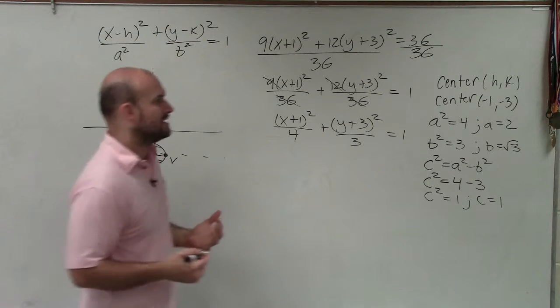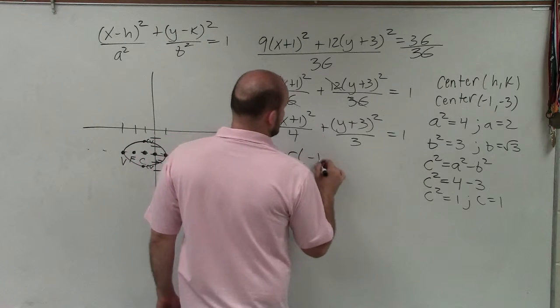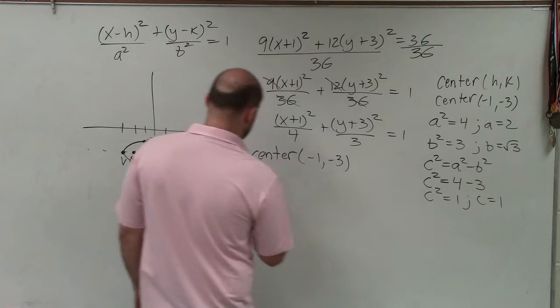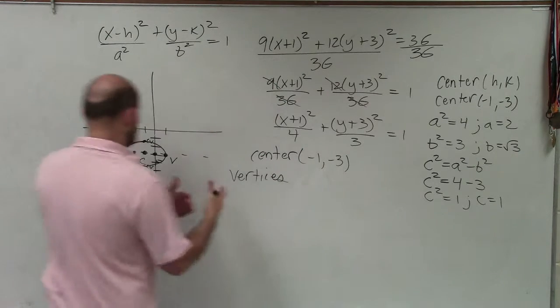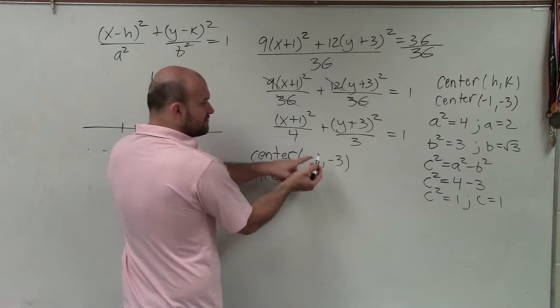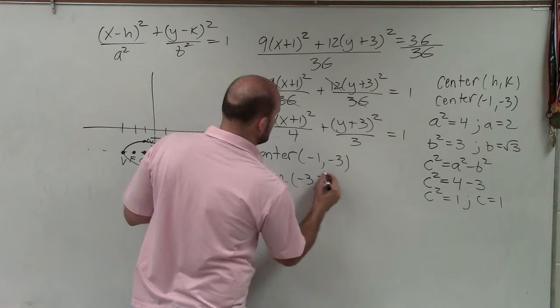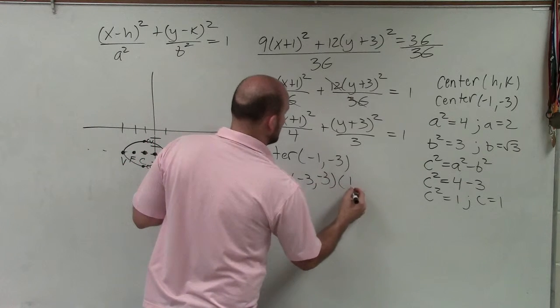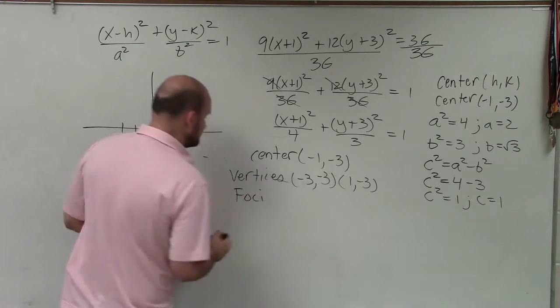And now the last thing we want to do is write in the information that we know, at least for those exact points. So the center is (-1, -3). My vertices, remember, are just to the left 2 and to the right 2 of the center. So all I'm simply doing is adding 2 and subtracting 2 from the x-coordinate of the center. So that's going to give me (-3, -3) and (1, -3).